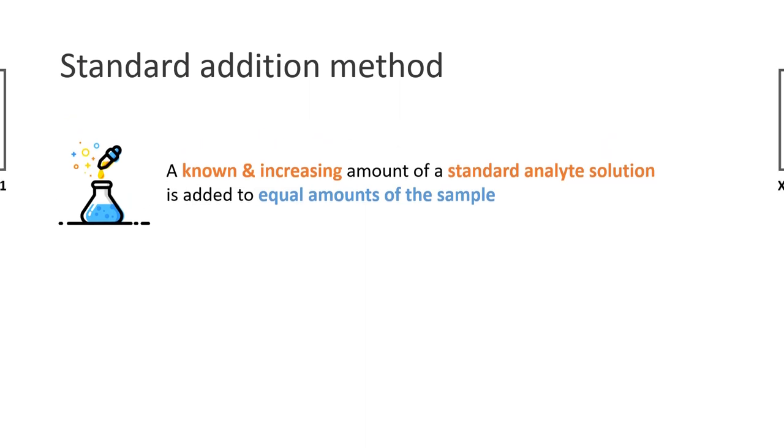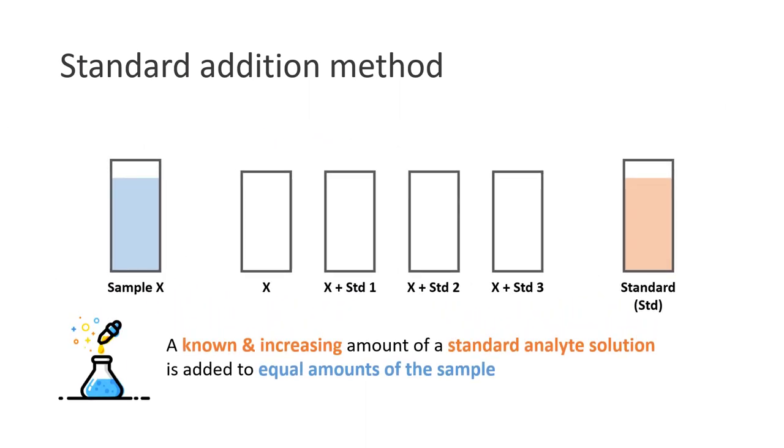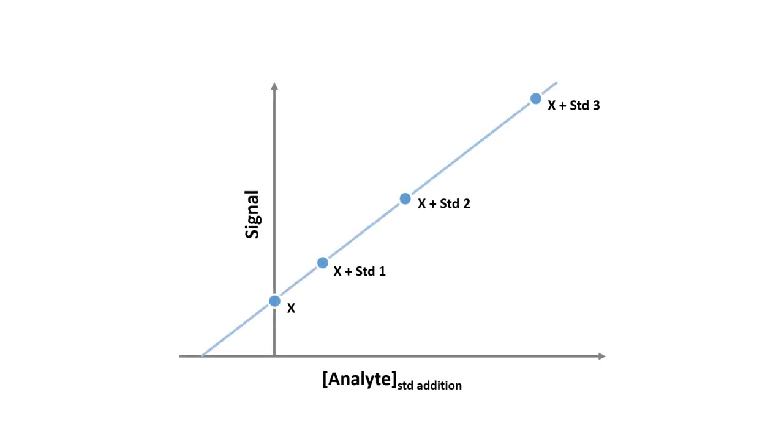For example, let's say we have a sample X. We can add 5 ml of sample X in each 50 ml volumetric flask, followed by adding a known and increasing amount of standard analyte solution, and finally top up each volumetric flask to the mark. The concentration of the analyte in the sample can be obtained from the X intercept of the calibration curve.